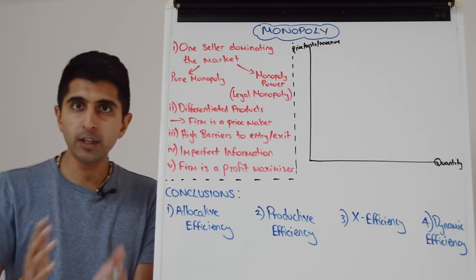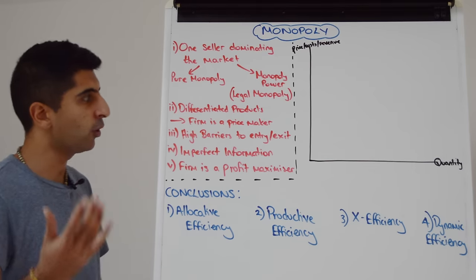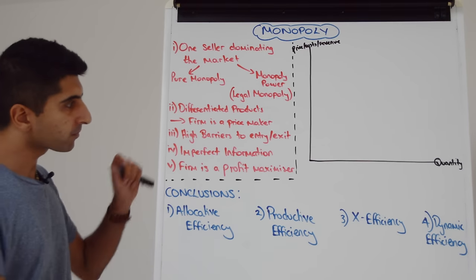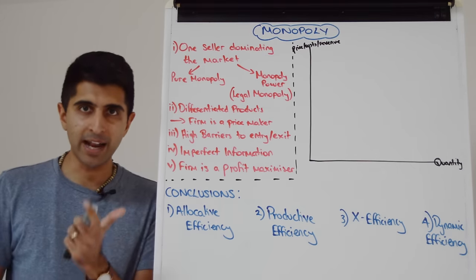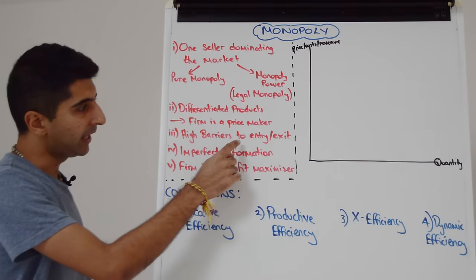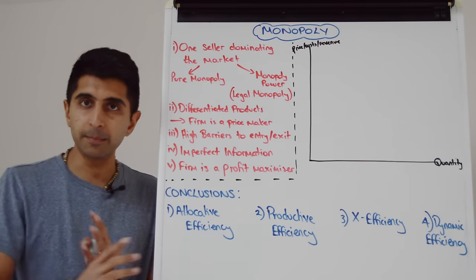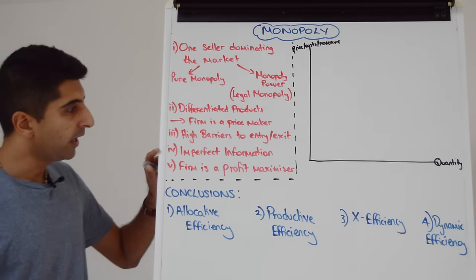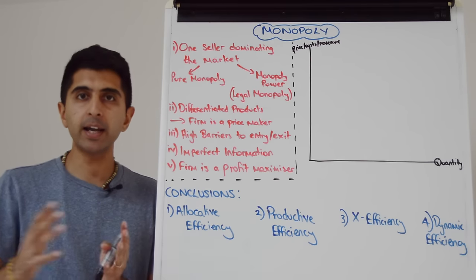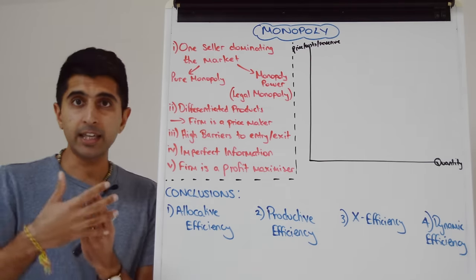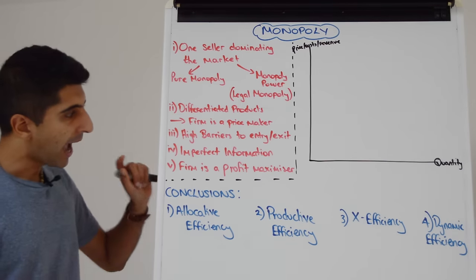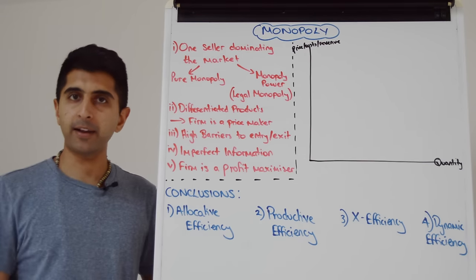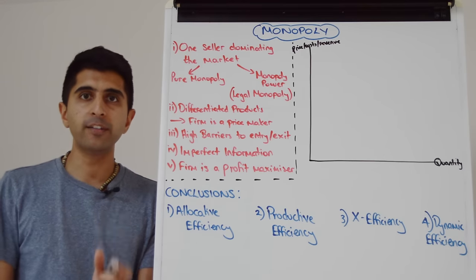There are differentiated products here, unique products, which means that naturally the monopoly is a price maker. There are high barriers to entry and exit, that's fundamental, and that means that supernormal profits can persist over time for this firm. There is imperfect information and market conditions, that's another reason that keeps firms out from this market, and we assume that the firm is a profit maximizer, producing where MR is equal to MC.